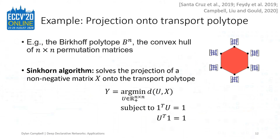Recall from the introductory video the toy example of an algorithm for computing the square root, which could be backpropagated through with standard techniques. Here we have a real-world example of this with the Sinkhorn algorithm, which is both amenable to backpropagation but can also be more efficiently implemented using implicit differentiation on the solution. This is an early example of a deep equilibrium network when solved to convergence. The algorithm solves the projection of a non-negative matrix onto the transport polytope — that is, solving an optimal transport problem — and has been used in many applications, from Wasserstein GANs to camera pose estimation.